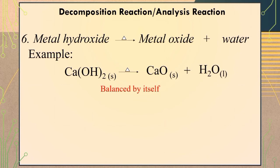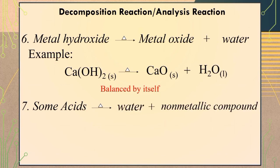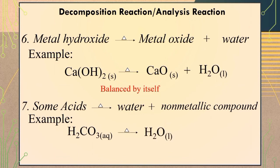The last type of decomposition reaction is the decomposition of some acids. When heat energy is applied to some acids, it will dissociate into water plus non-metallic compound. For example, when heat energy is applied to carbonic acid, it will dissociate into water plus carbon dioxide, which is the non-metallic compound. Through inspection, we can say that the equation is balanced by itself.